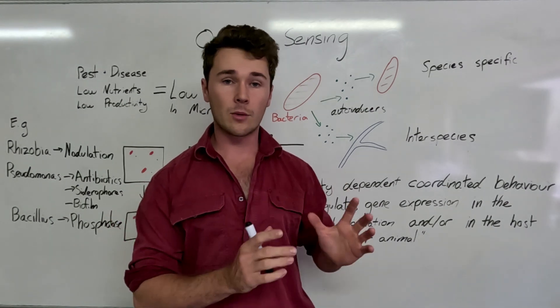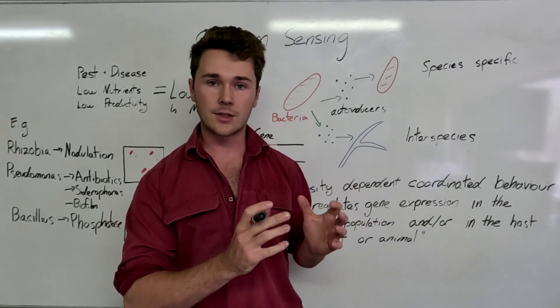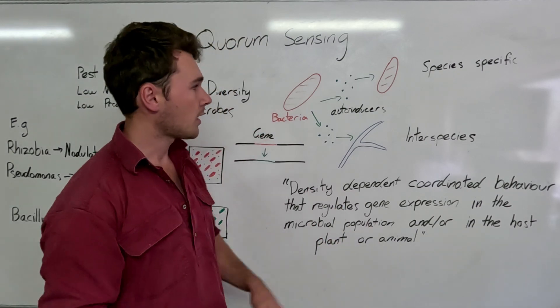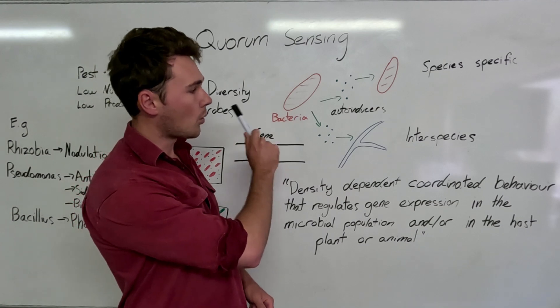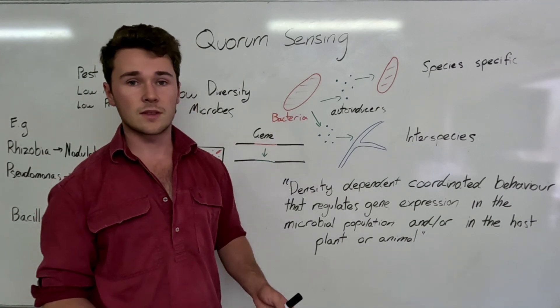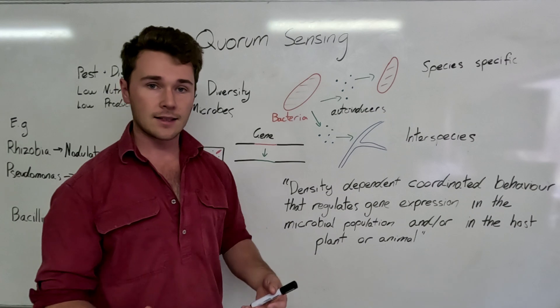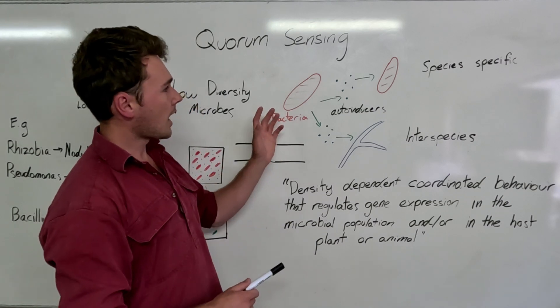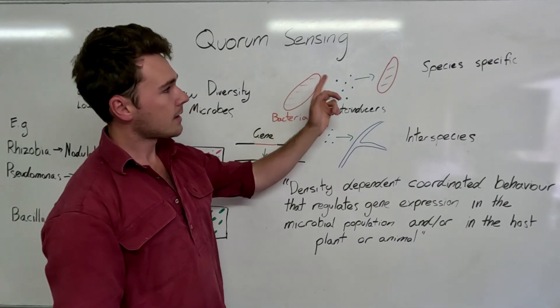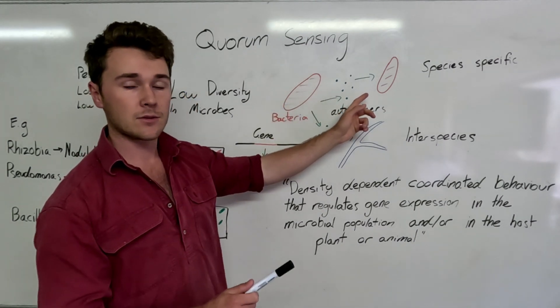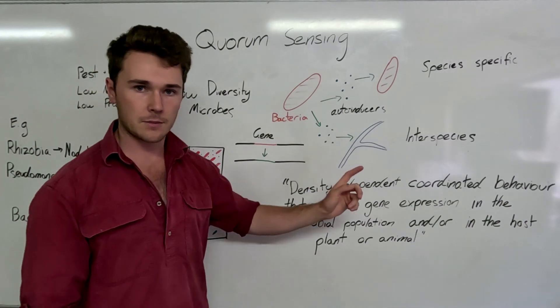They're not like us, they can't hear or see. So what they do to communicate with each other is the production of auto-inducers. Now, auto-inducers are simply signaling compounds that they make and release into the soil for either the same species to pick up or different species to pick up.